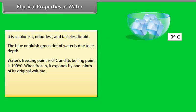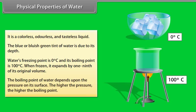Water's freezing point is 0 degrees Celsius and its boiling point is 100 degrees Celsius. When frozen, it expands by one-ninth of its original volume. The boiling point of water depends upon the pressure on its surface. The higher the pressure, the higher the boiling point.